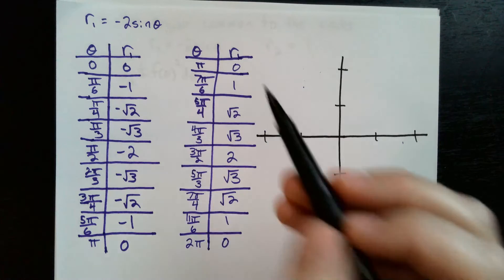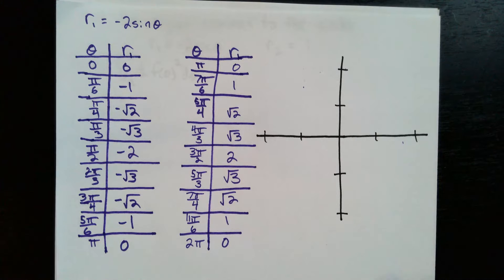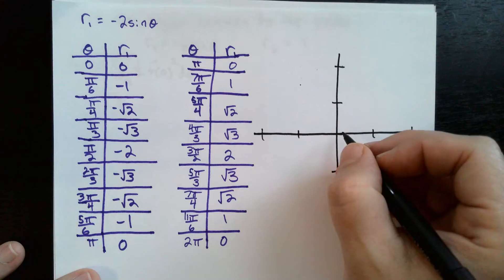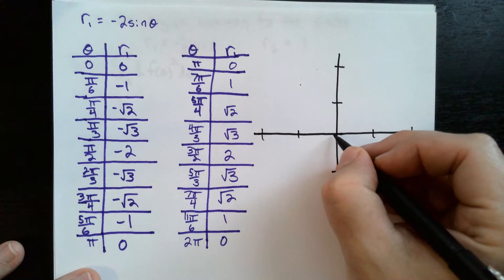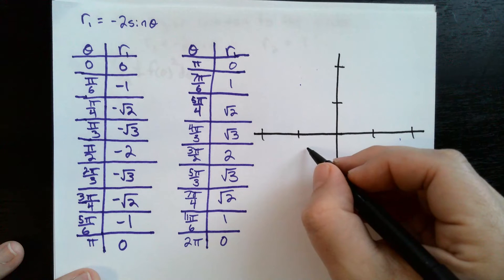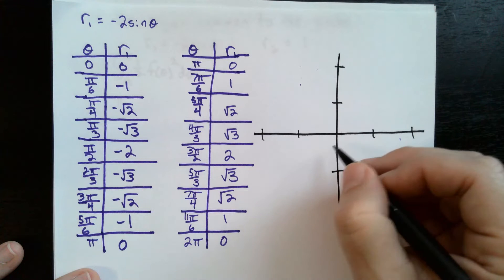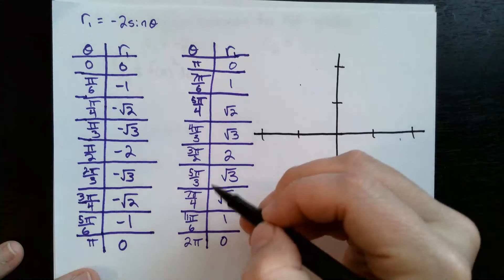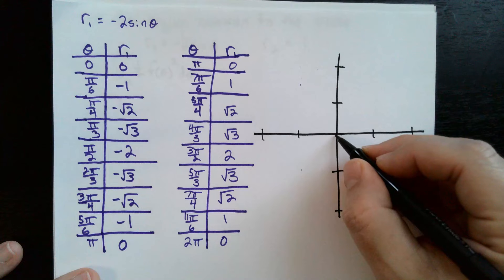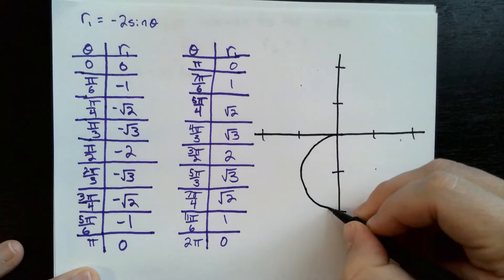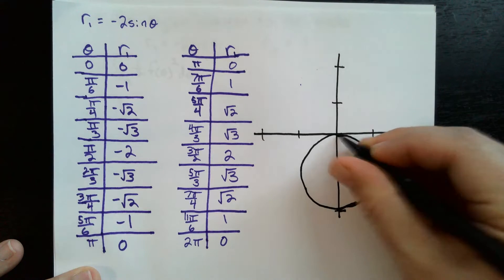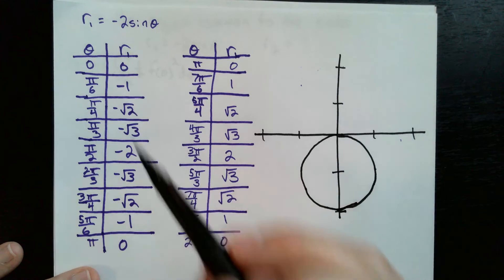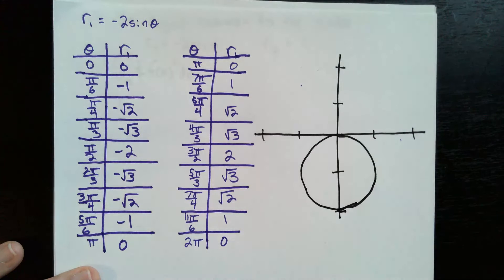We can get away with just looking at one part to see the whole graph, which comes in handy when finding the area between these two curves. We're going to focus only on pi to 2 pi. At pi, r is equal to 0, so that's in the middle. At 7 pi over 6, r equals 1, and at 5 pi over 4, r equals square root of 2. So we're making a circle with radius 2, and you can plot all these points to get the graph of r1, which is negative 2 sine theta.